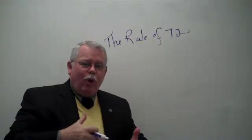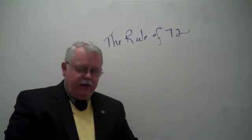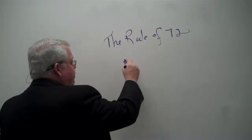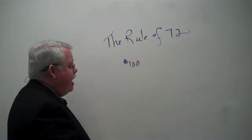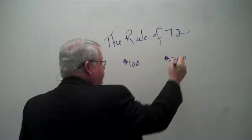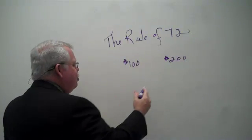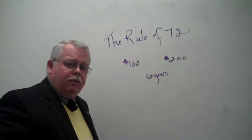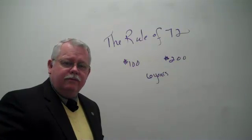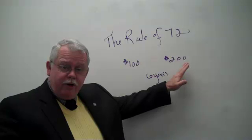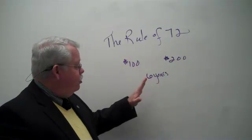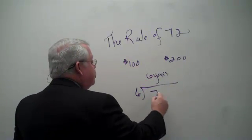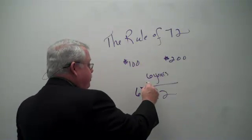What we're looking at is a very quick, easy, and approximate way to calculate the interest rate on an investment. If you start with a given amount of money — say $100 — and it doubles to $200, and it took you six years for your money to double, what kind of interest rate were you earning? We take that period of time, six, and divide it into 72. The answer is 12.